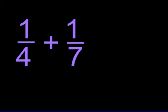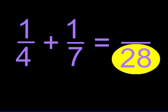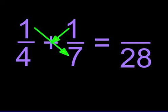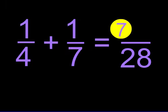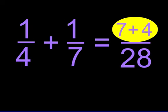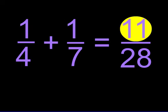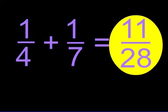First, we will multiply four times seven equals twenty-eight. So twenty-eight is our denominator. Next, we will cross-multiply. One times seven equals seven. One times four equals four. Add seven plus four, and we get eleven for the numerator. Our answer is eleven over twenty-eight.